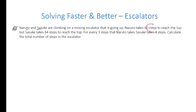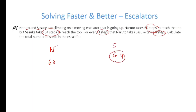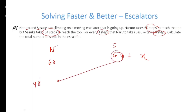Moving ahead: Naruto and Sasuke are climbing on a moving escalator going up. Naruto takes 60 steps to reach the top, Sasuke takes 64 steps. For every 3 steps Naruto takes, Sasuke takes 4 steps. In the same time Sasuke takes 64 steps, Naruto would take 48 steps.